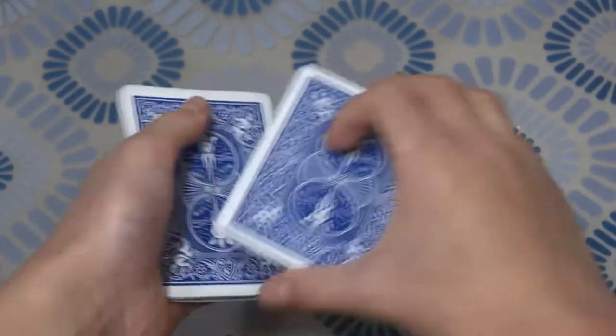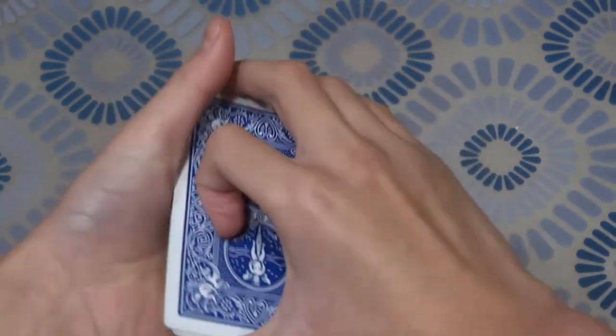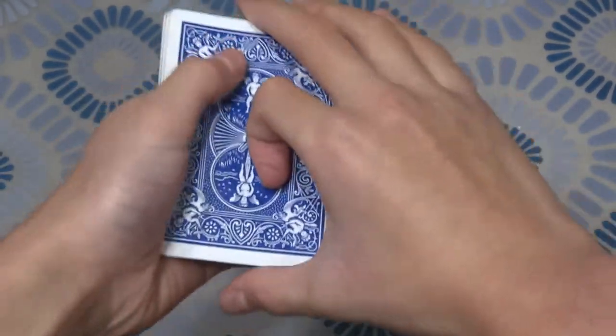And then you do the Elmzy Count again. And then the other Queen flips over. And then you turn the Queen over again.